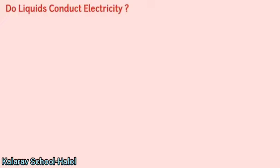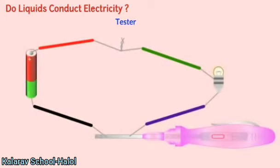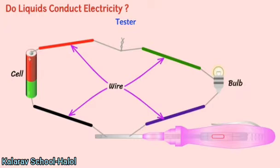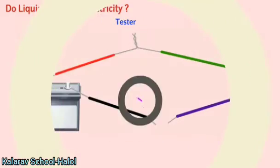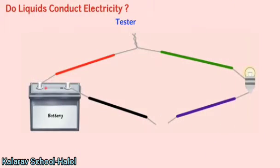In class 6 you have learned to create a tester with the help of a cell, four wires and a bulb. Create a similar tester but instead of using a cell, this time use a battery. With the tester, perform the activity given on the screen.